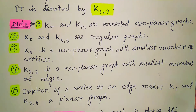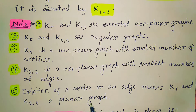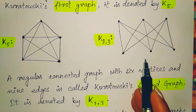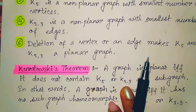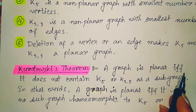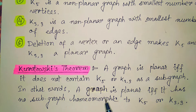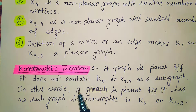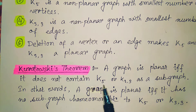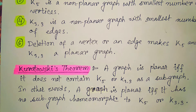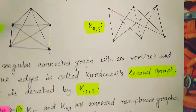One more important property: deletion of a vertex or an edge makes K5 and K3,3 planar. If we delete any one vertex or any one edge from either of these two graphs, the graph becomes planar. Now there is Kuratowski's theorem: a graph is planar if and only if it does not contain K5 or K3,3 as a subgraph — or equivalently, it has no subgraph homeomorphic to K5 or K3,3.